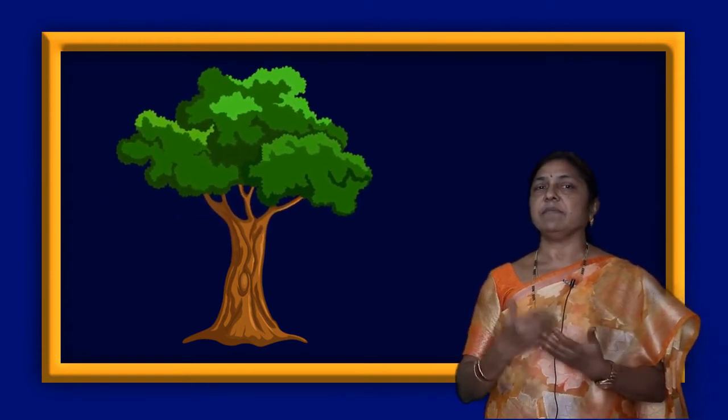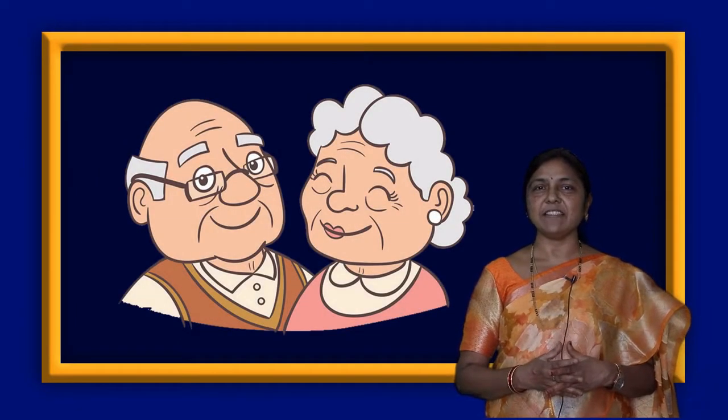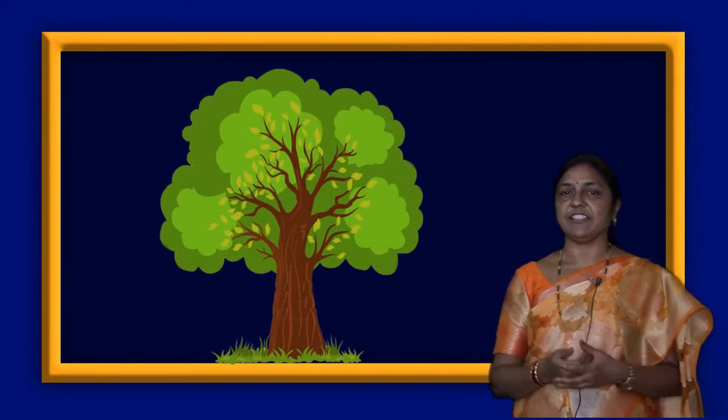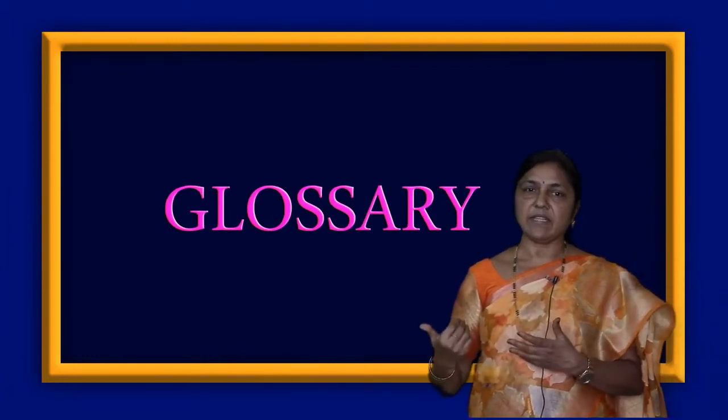Let us learn about the trees now. We know some more examples of trees. Children, do you have grandparents at home? Many children have grandparents at home. How many years have they lived? Maybe 70, 80, or 90 years. Nowadays, many people are more than 100 years old. The same way, trees also have their age. Let us see the glossary before going to learn about the age of a tree.